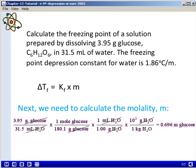So in the numerator we have moles of solute, and in the denominator we have kilograms of solvent. When we do the math, we find that the molality of the solution is 0.696 molality.